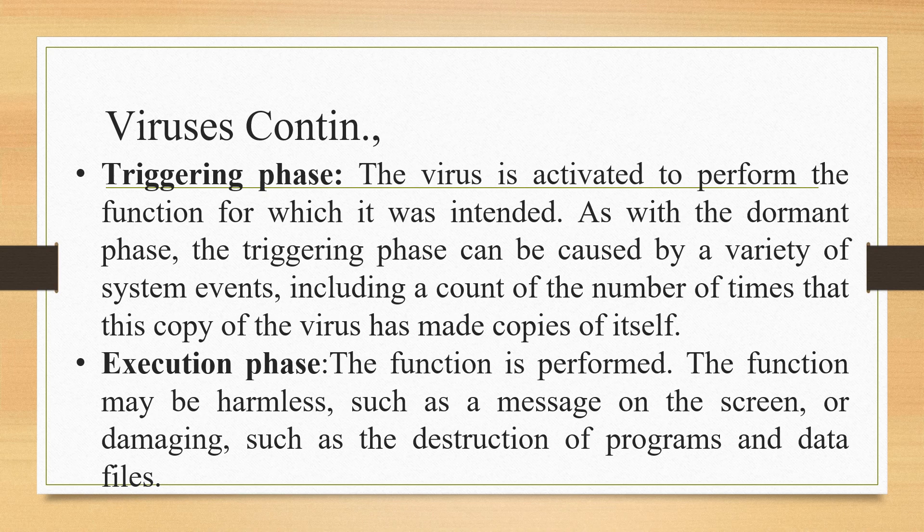The third is the triggering phase, in which the virus is activated to perform the function for which it was intended. As with the dormant phase, the triggering phase can be caused by a variety of system events, including a count of the number of times this copy of the virus has made copies of itself. The fourth is the execution phase, in which the function is performed — it may be harmless, such as a message on the screen, or damaging, such as the destruction of programs and data files.